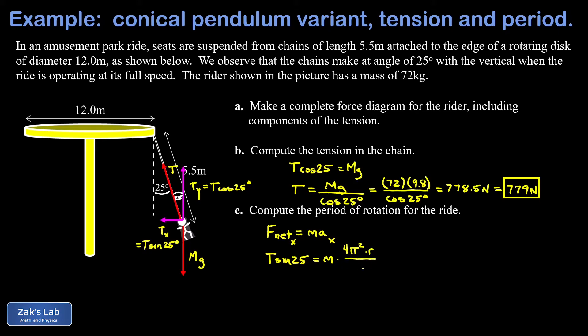We're used to using a T for period, but I already used T for tension, so I'm just going to call it P. Now we can move the P squared to the left hand side, and on the right hand side we have 4 pi squared r times m over T sine 25.